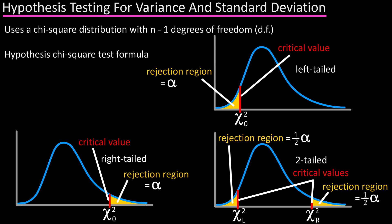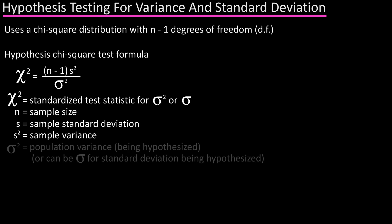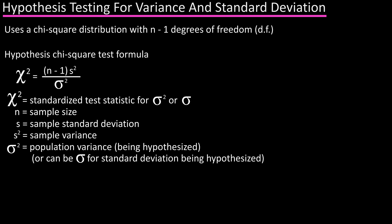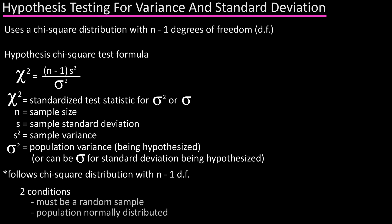The formula we use for hypothesis testing for variance and standard deviation is: chi-square equals n minus one times s squared divided by sigma squared. In this formula, chi-square is the standardized test statistic, n is the sample size, s is the sample standard deviation, s squared is the sample variance, and sigma squared is what is being hypothesized. This follows a chi-square distribution with n minus one degrees of freedom. There are two conditions that must be met: the sample must be a random sample, and the population must be normally distributed.